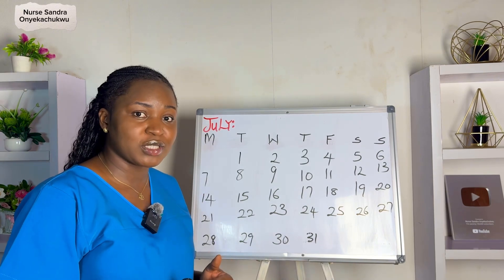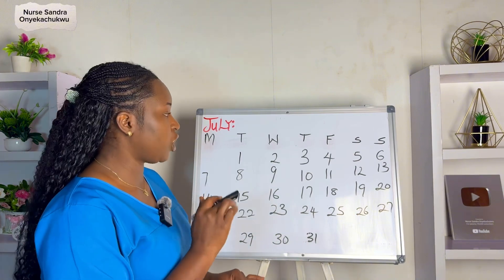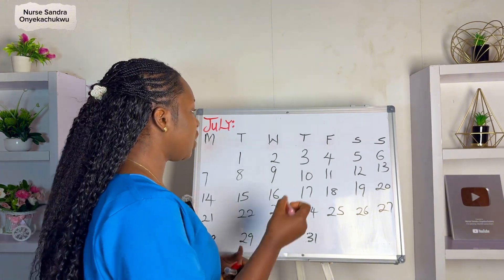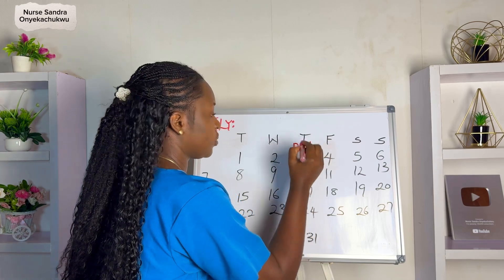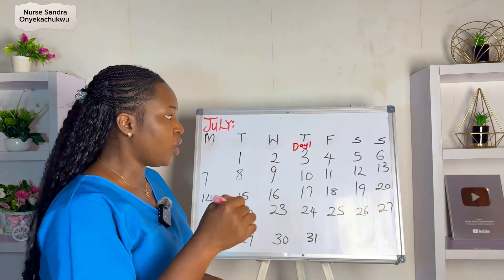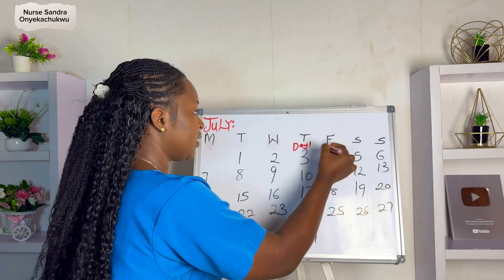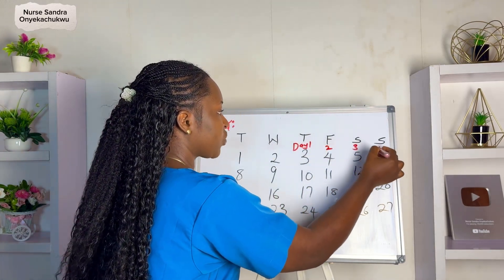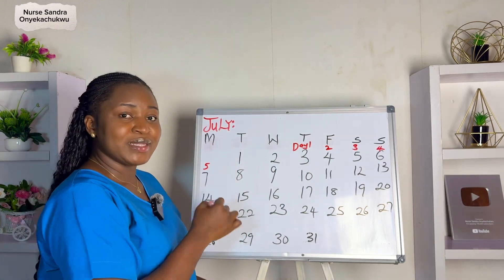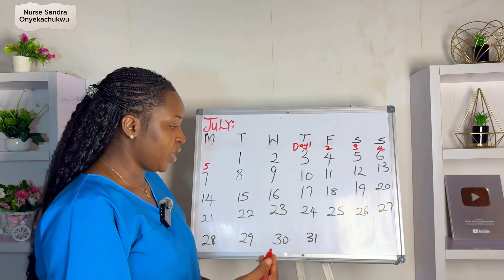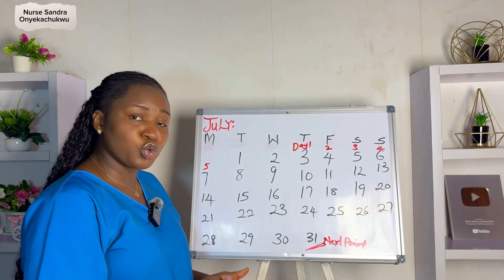It's not the day you start seeing spotting or brown discharge. So let's say your period started on the 3rd of July — the 3rd of July is going to be your day one. Let's assume your period lasted for five days: day one, day two, day three, day four, day five. Then the next time you saw your period is the 31st of July.